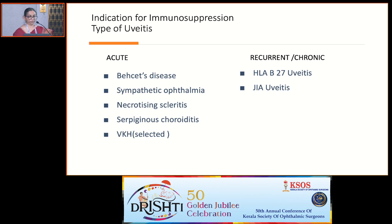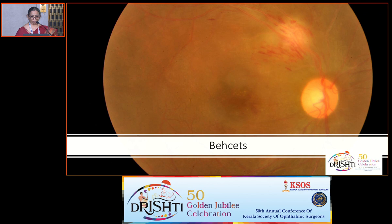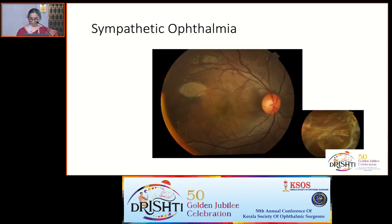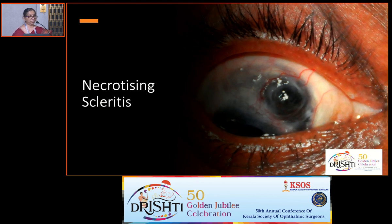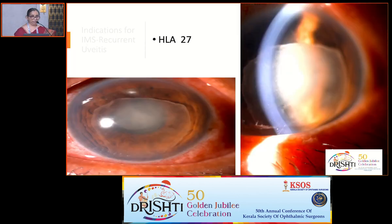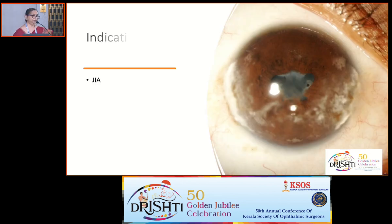Which patients need immunosuppression? The primary indications — where you start immunosuppression along with high-dose oral steroids as soon as you're sure of the diagnosis — include Behçet's disease, sympathetic ophthalmia, necrotizing scleritis with or without PUK in granulomatosis with polyangiitis or rheumatoid arthritis, selected cases of immune-mediated serpiginous choroiditis, and selected cases of VKH. The next set: recurrent inflammation as in HLA-B27 uveitis or chronic uveitis associated with JIA — these need early immunosuppression.